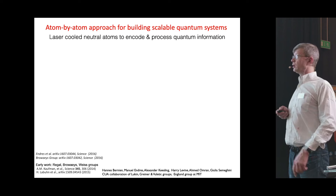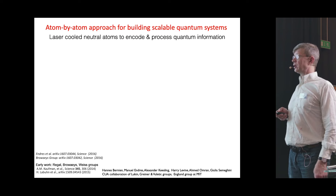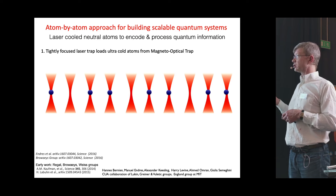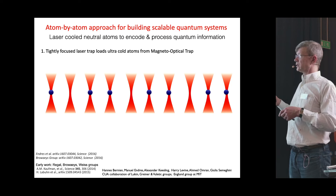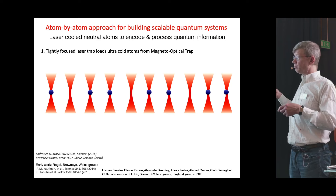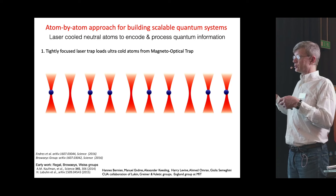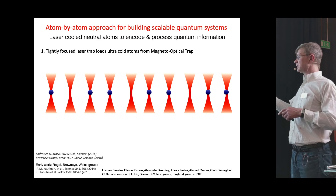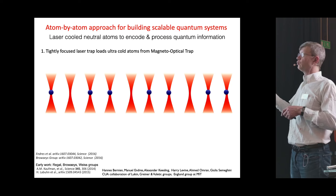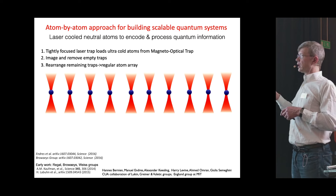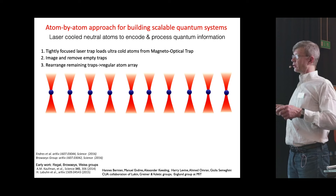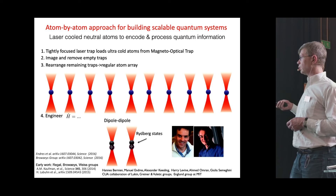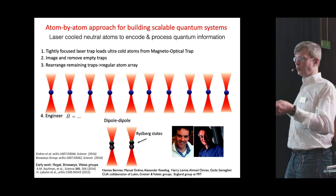We address this problem using neutral atom arrays. We build these arrays using optical tweezers — tightly focused laser beams — to trap individual atoms. By imaging the atoms, we can detect which tweezers are full and which are empty, extract entropy, reconfigure the arrays, and end up with atoms sitting a few micrometers apart. To make them interact, we excite them into so-called Rydberg states. This is a project we started nearly 10 years ago in collaboration between my group and Munich alumni Lukin and Greiner.